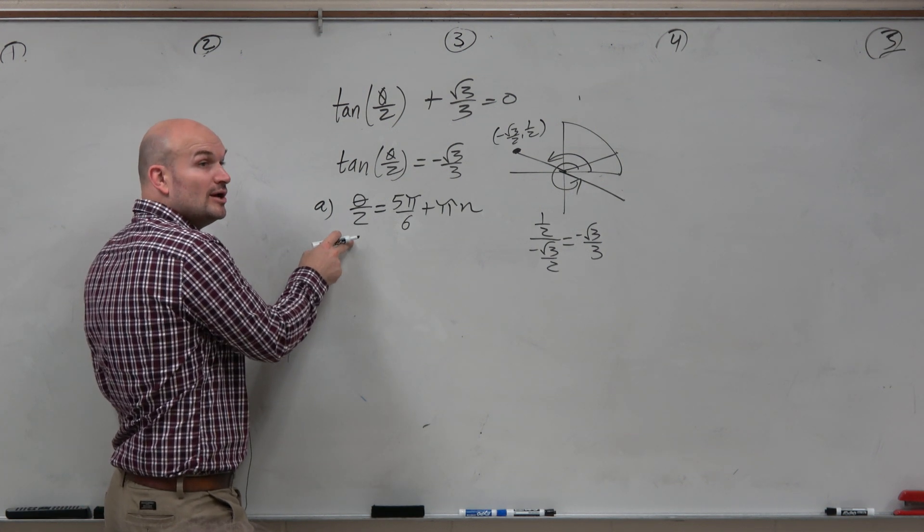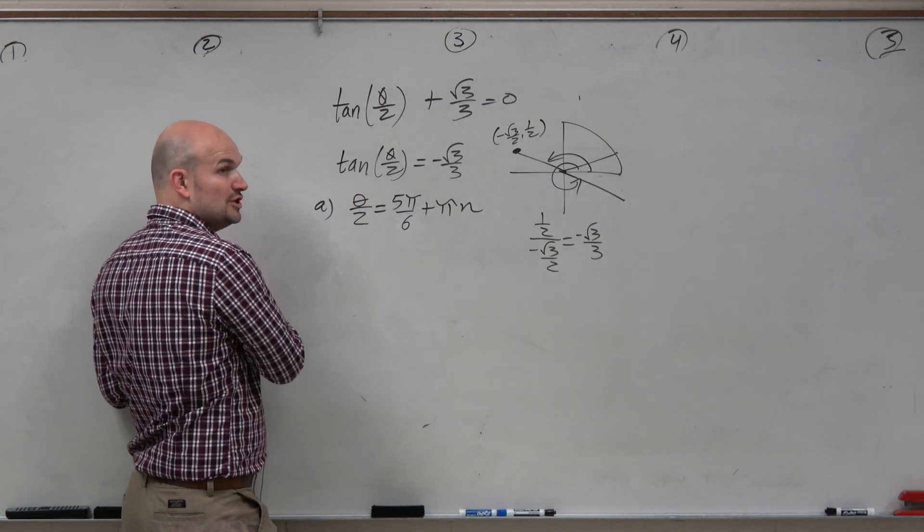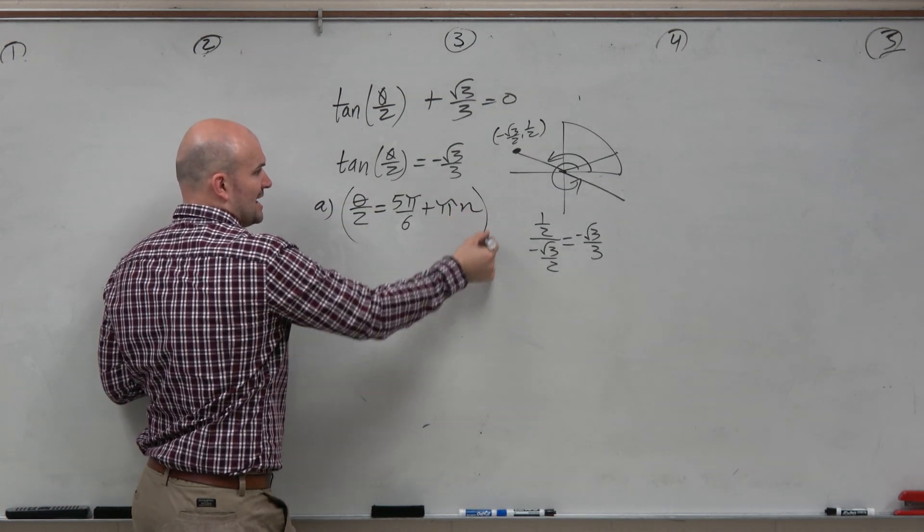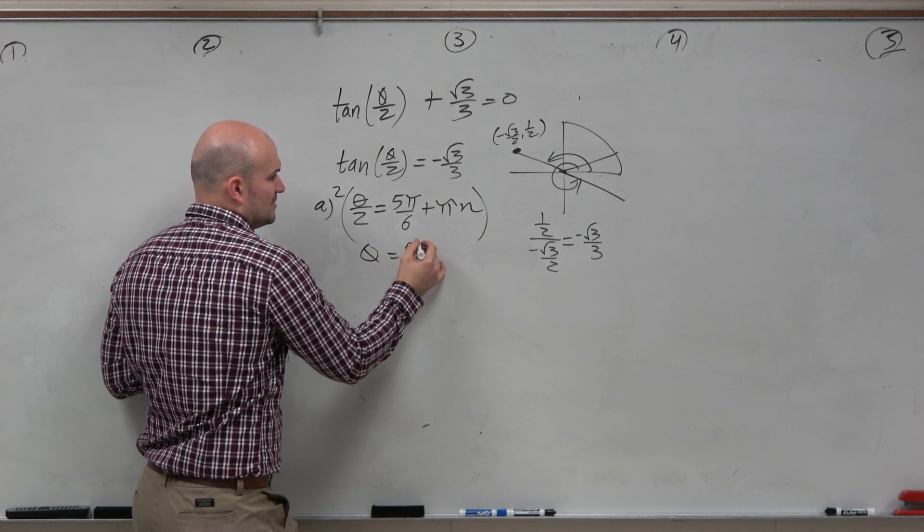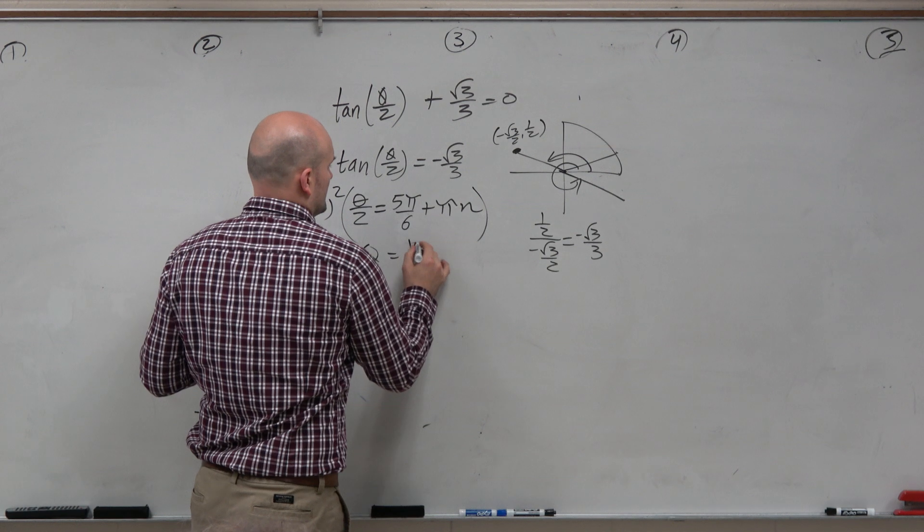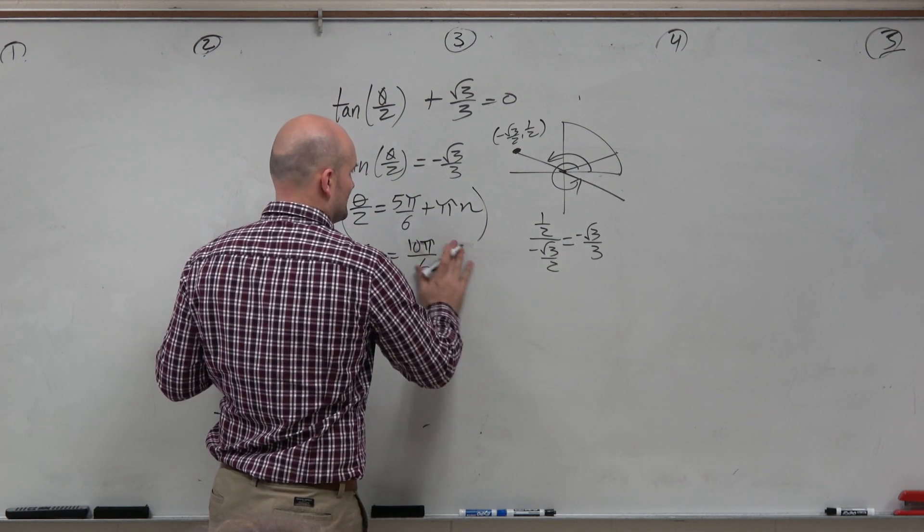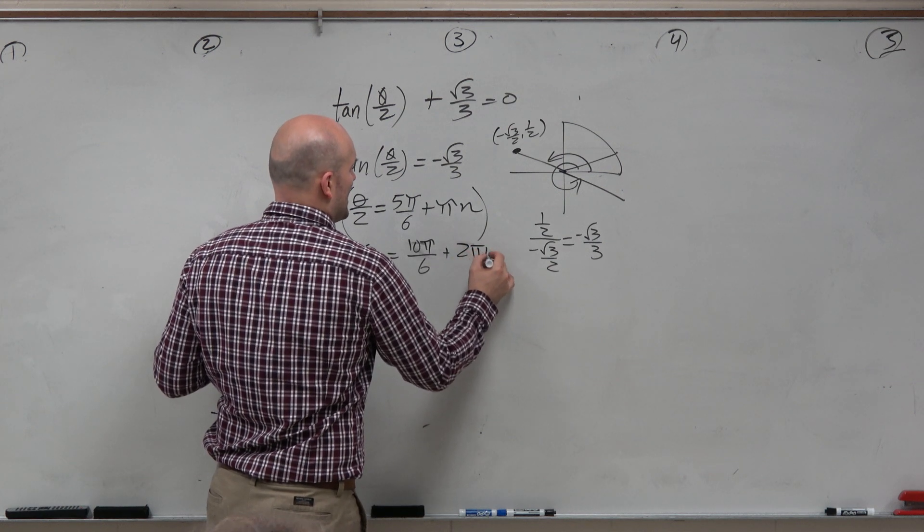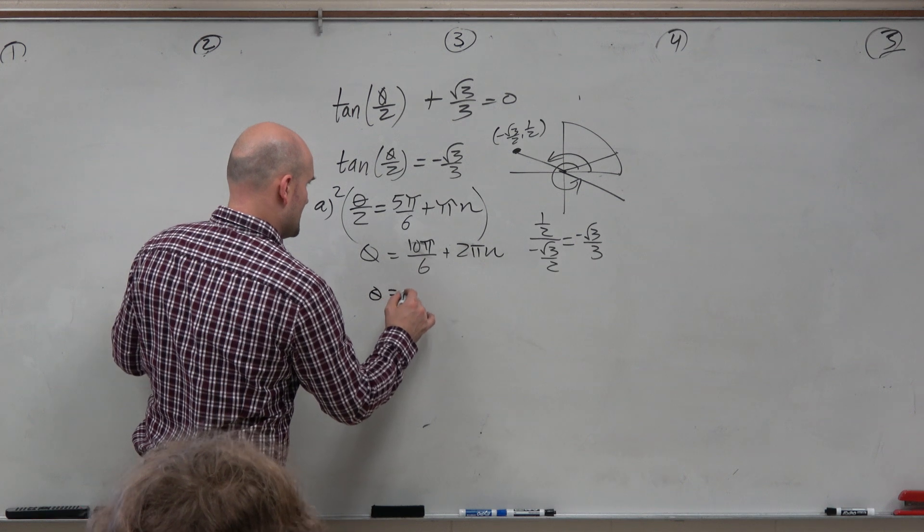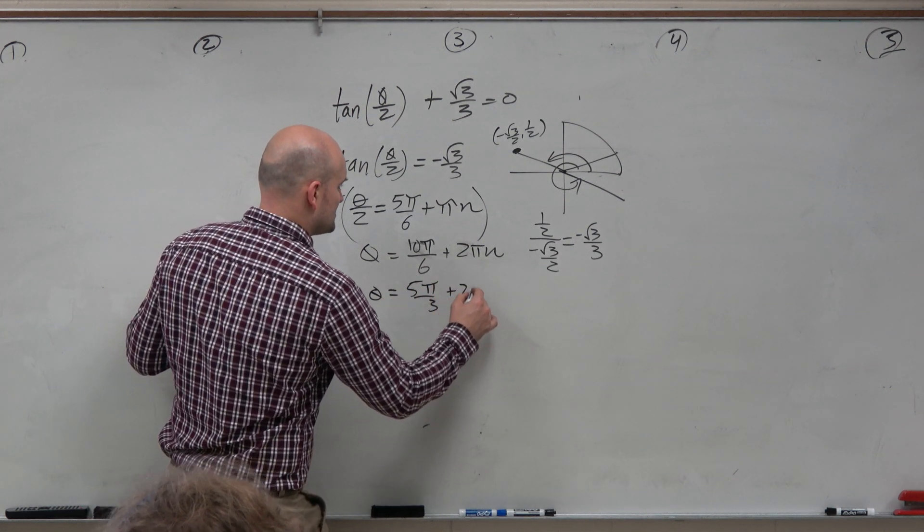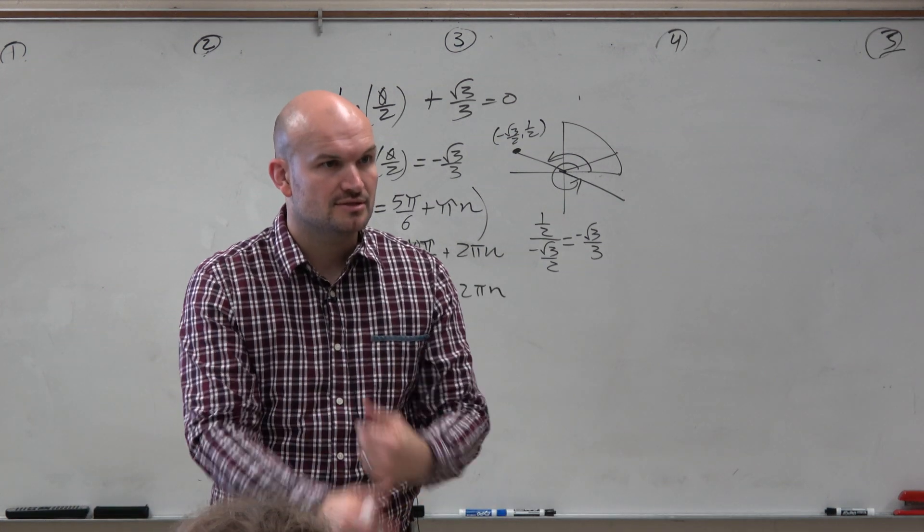So, but again, we don't solve for theta halves. We are going to solve for theta. So to undo divided by 2, we need to multiply everything by 2. So theta equals 10 pi over 6, it is easier that way, plus 2 pi over 3 plus 2 pi n. And then I can just simplify this answer for those of you that are not paying attention. That's going to be 5 pi over 3 plus 2 pi n. So that is all the solutions to the equation.